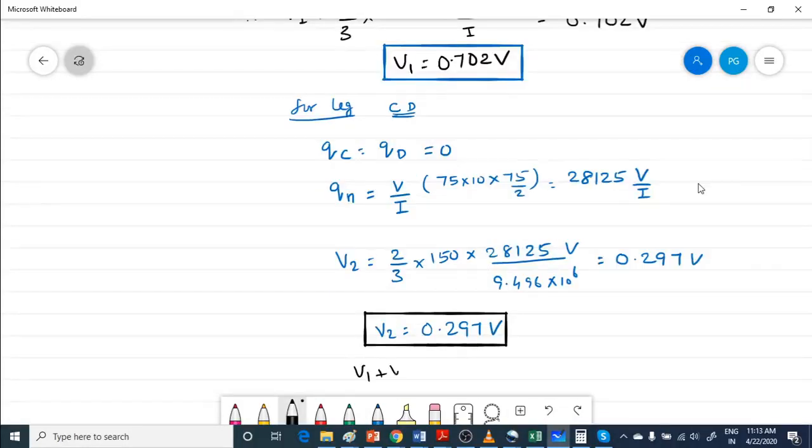V1 plus V2 should be equal to external value. So you can check here 0.702 V plus 0.297, which is 0.999 V, which is equal to V.